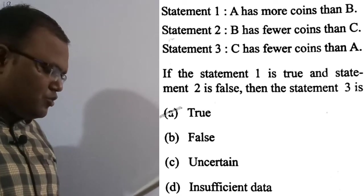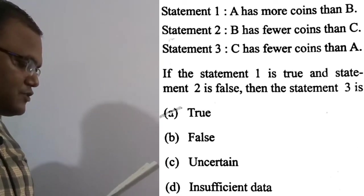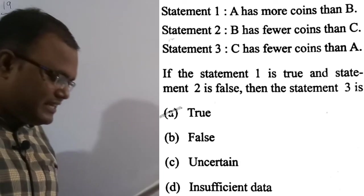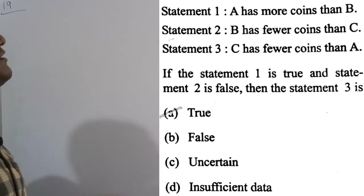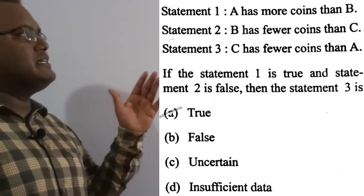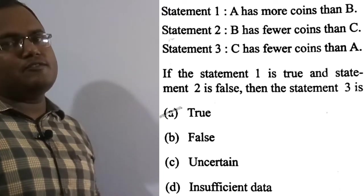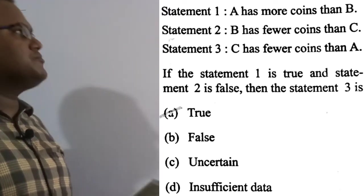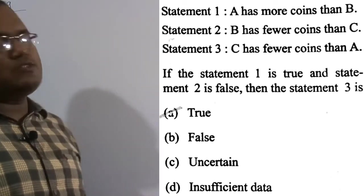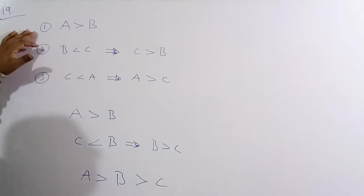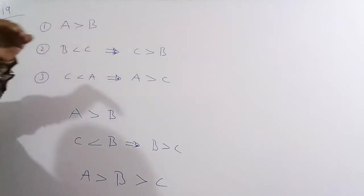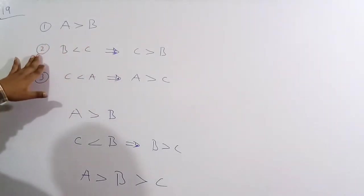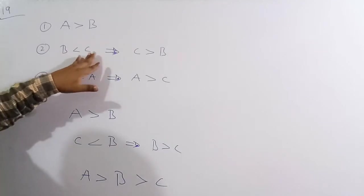Now solving the 19th question. Statement 1: A has more coins than B. Statement 2: B has fewer coins than C. Statement 3: C has fewer coins than A. If Statement 1 is true and Statement 2 is false, what can we conclude about Statement 3?